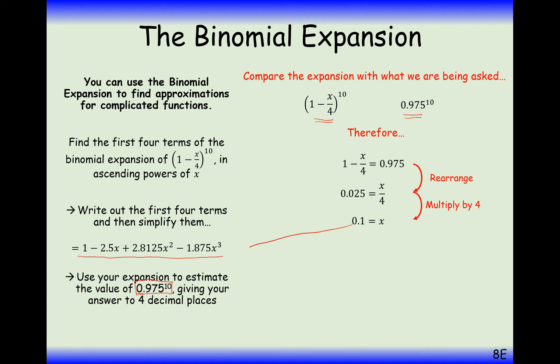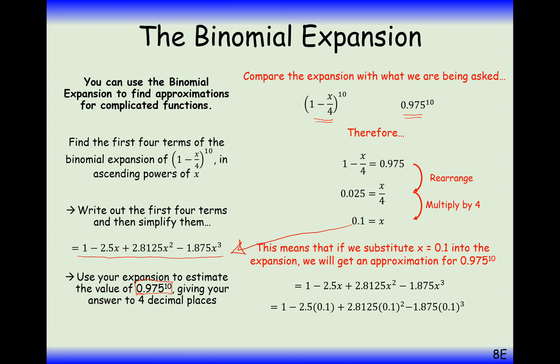And now what we can do is substitute in 0.1 into this expansion here. So what do we get when we substitute in 0.1 as our value for x? We get 0.77625. If we were to actually have done 0.975 to the power of 10 on the calculator, we get 0.776329, which is not too bad of an approximation really here.